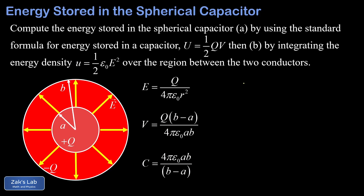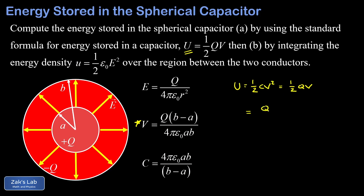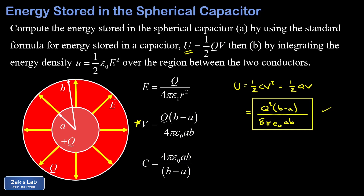To find the energy stored in the capacitor, I could directly quote U = ½QV, but I normally remember this as U = ½CV². We replace the capacitance with its definition Q/V, one of those V's cancels, and we end up with ½QV, which is more convenient here. All we have to do is take the potential difference between the two plates, multiply by Q and by ½, giving us U = Q²(b − a) / (8πε₀ab).